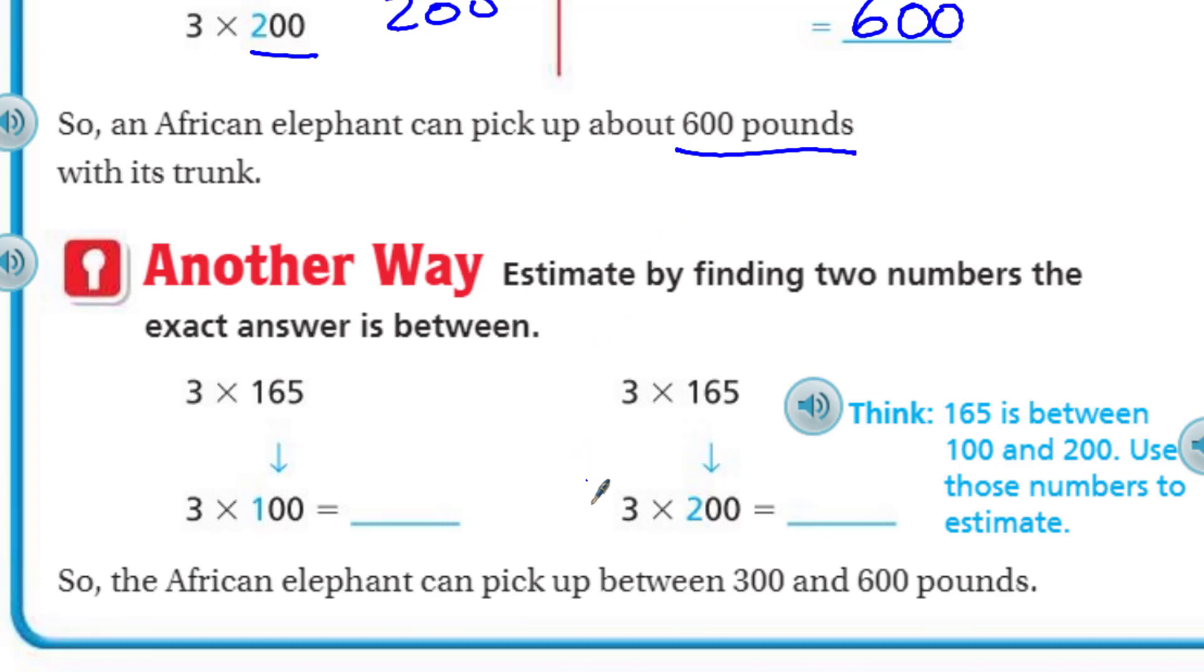Another way says to estimate by finding two numbers the exact answer is between. Here they have three times 165. They say, let's take three times 100, which is equal to 300. And this is the example we already had, which was three times 200, which is 600. Think, 165 is between 100 and 200. Use those numbers to estimate. So the African elephant can pick up between 300 and 600 pounds.